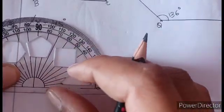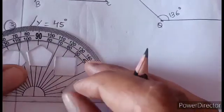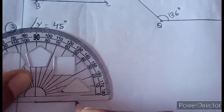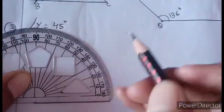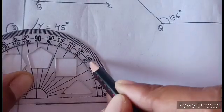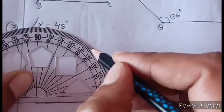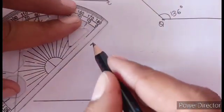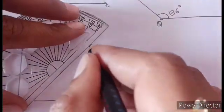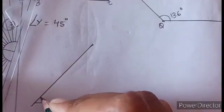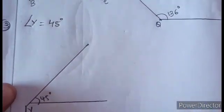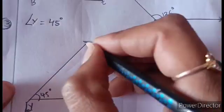And for the angle of 45 degrees, use a line draw. Here the midpoint line drawn at 45 degrees. So angle Y equals 45 degrees.